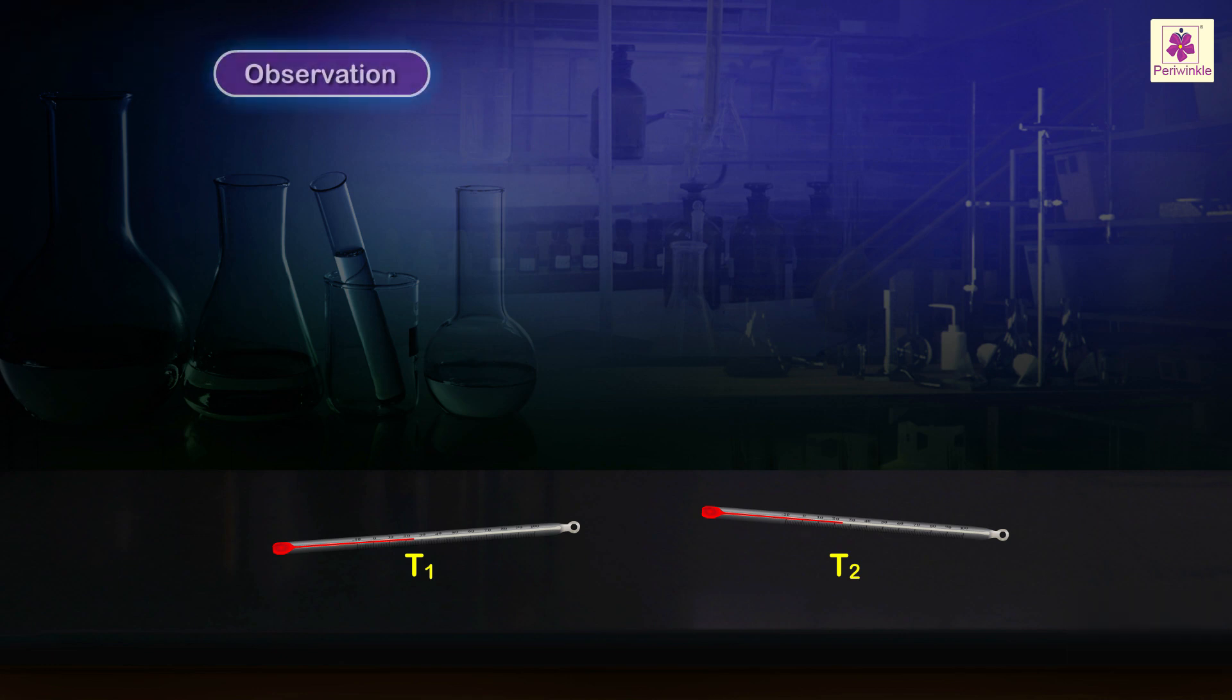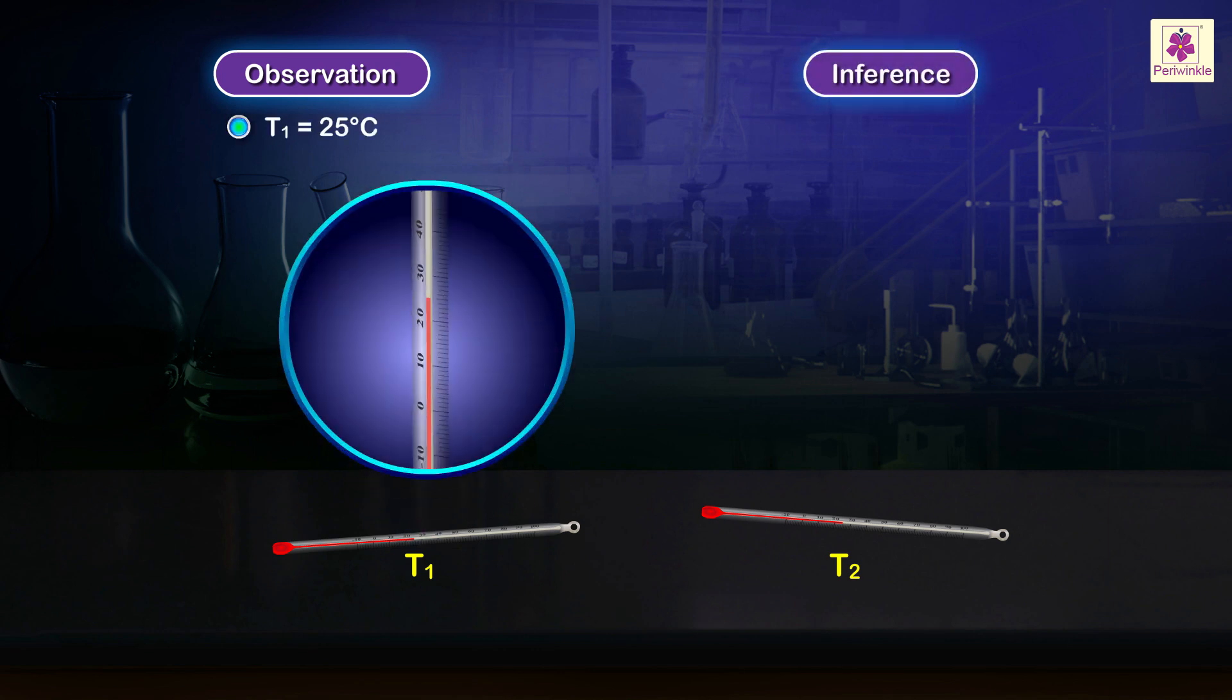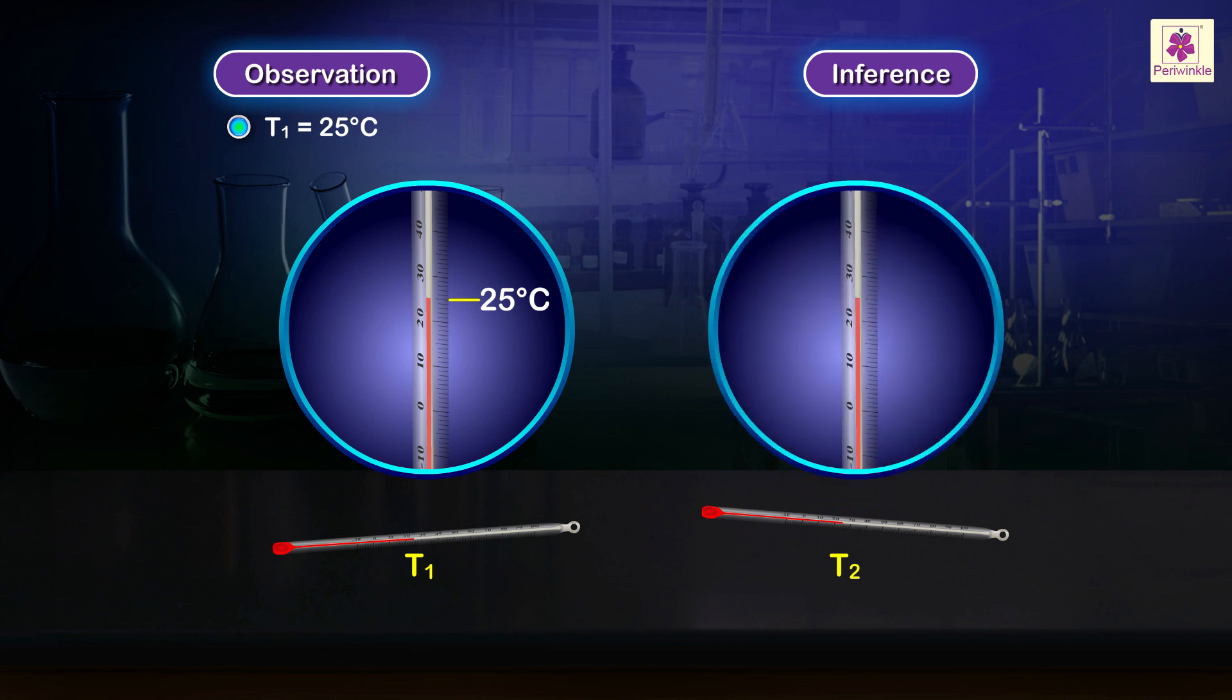Observation: T1 equals 25 degrees Celsius. T2 equals 25 degrees Celsius. Inference: The thermometers show the air temperature in the lab.